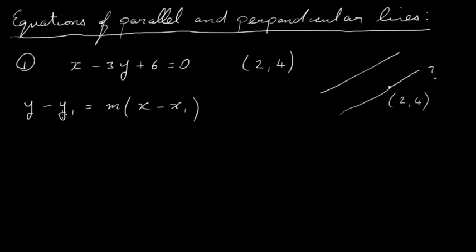In order to use the formula y minus y1 equals m times x minus x1 — which is the general formula for the equation of a line — we need two things: the slope of the line we're looking for, and a point on that line. We have the point (2, 4), so that's our x1 and y1. We just don't have the slope yet.